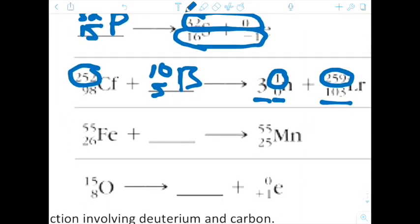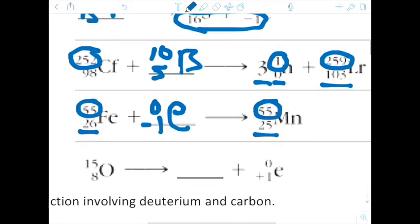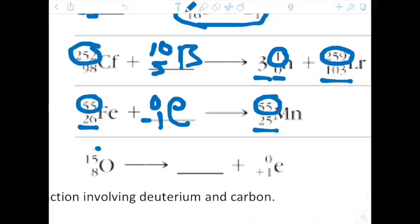With iron, we see we have iron, which is 55. On this side, we have 55, so that means that has to be a zero. Here we have 26, and then we have 25, so that means that is a negative one. And we see that that is put an E for a beta particle. And then oxygen. We see we have oxygen. We have 15 on this side, we have a zero, so this has to be 15. We have eight on this side, that means we need eight on this side. We already have one, so that means it is going to be seven. Seven protons would be nitrogen.